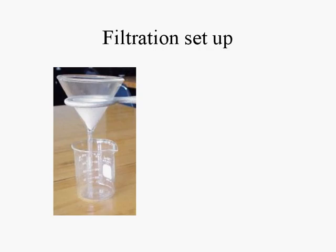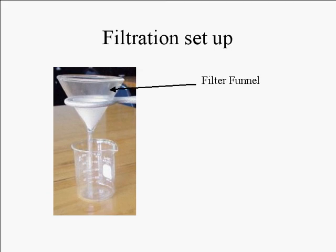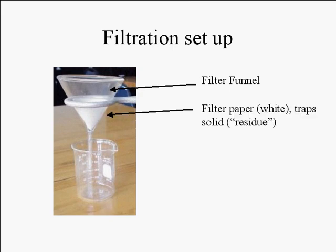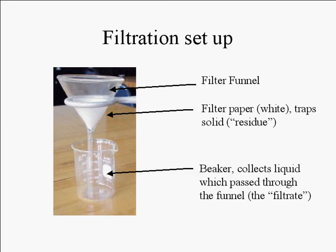Then we do a filtration. Here's a typical laboratory setup for filtration. A funnel is mounted on a ring stand. A piece of filter paper is folded to fit into the funnel. We pour our mixture into the funnel. The sand will be trapped in the paper. The water, which contains the dissolved salt, passes through the filter paper and is collected in a beaker. The salt and water mixture is called the filtrate.